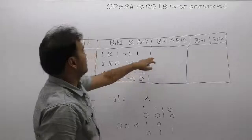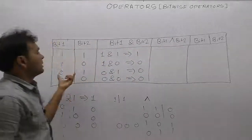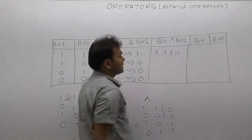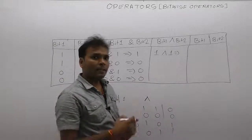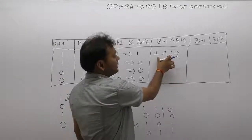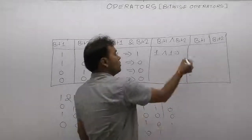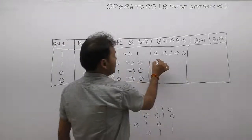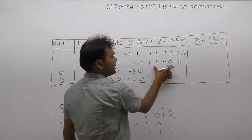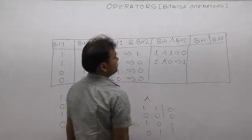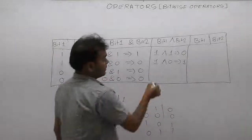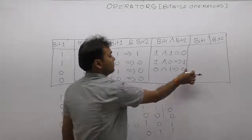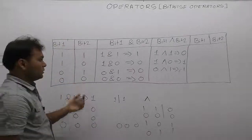For XOR, the combinations are: first combination one XOR one — both are the same, so the result is false, meaning zero. Next: first bit is one, second bit is zero — one XOR zero, both are different, therefore the result is true, meaning one. Next: first bit is zero, second bit is one — zero XOR one, both bits are different, result is true, meaning one.